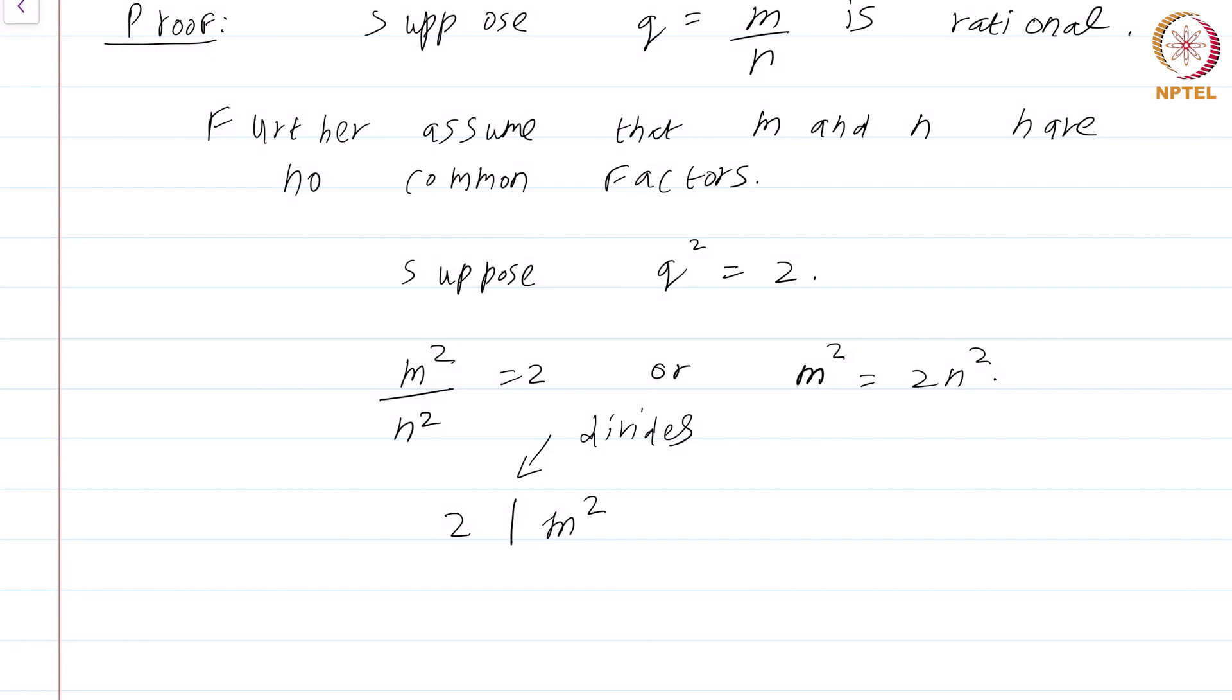But if you think about it, since 2 divides m², it must be the case that 2 divides m. Think about why this is true. If 2 were to divide m², there is no choice but for 2 to divide m.